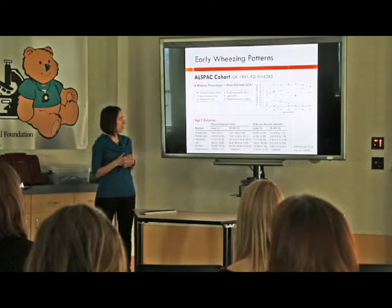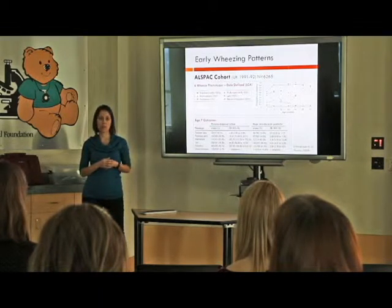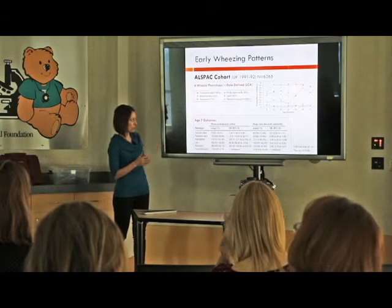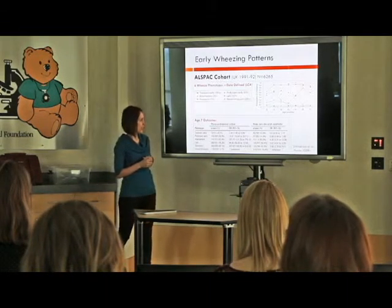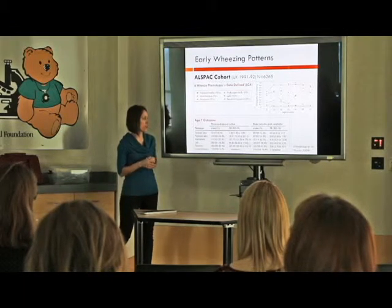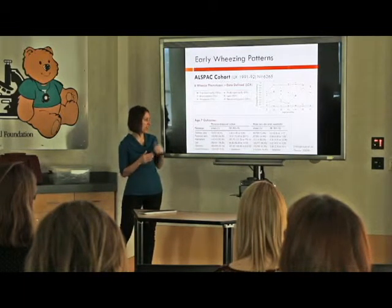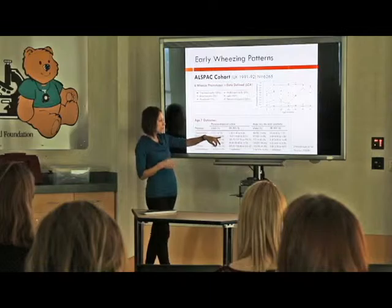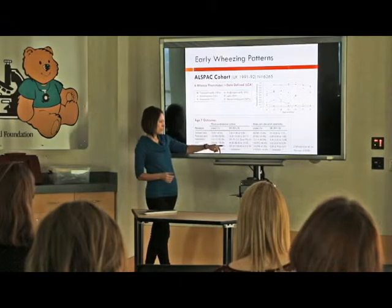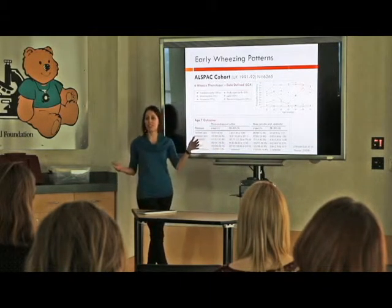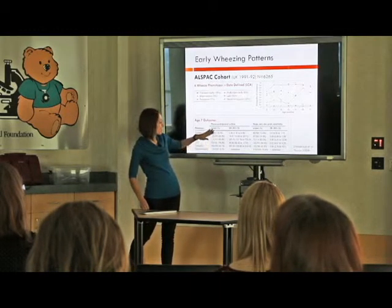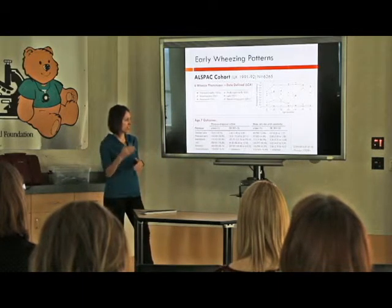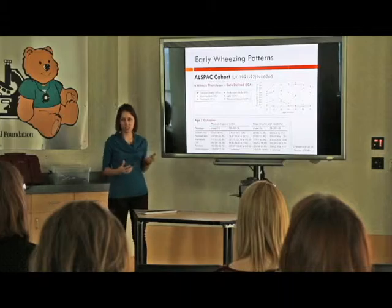They also studied whether early wheezing phenotypes had an important effect on later life disease, going out to age seven. For physician-diagnosed asthma, there was a strong increase in risk with any of these wheezing phenotypes — a gradient where transient early wheezing was associated with a two-fold increased risk, all the way up to persistent wheezing with a 300-fold increased risk. They also saw an association with atopy, though not as strong as for asthma.